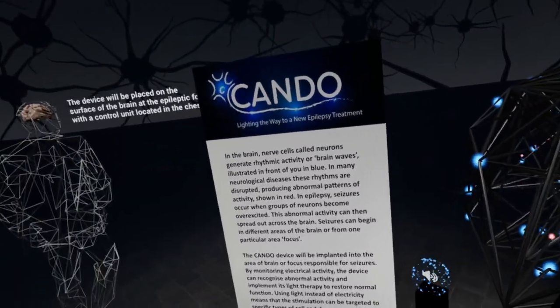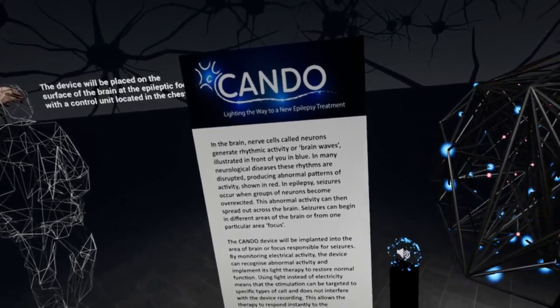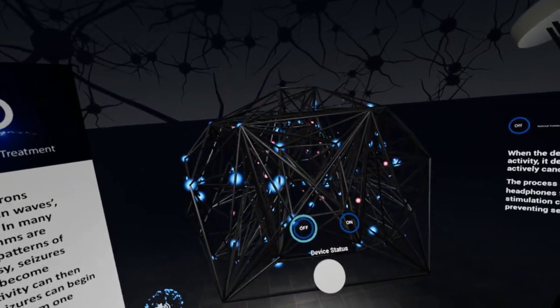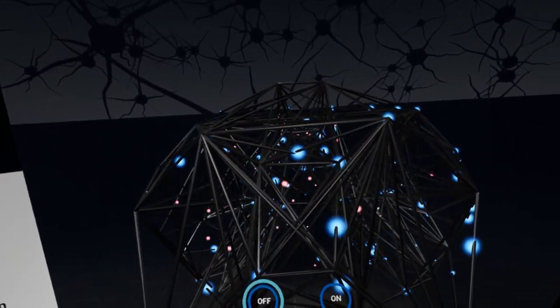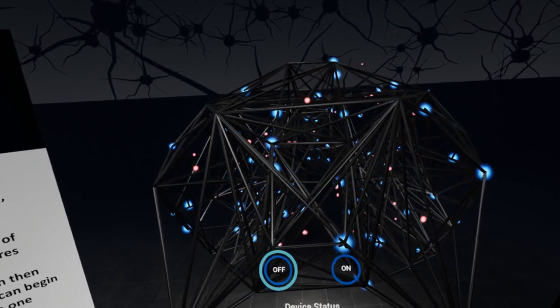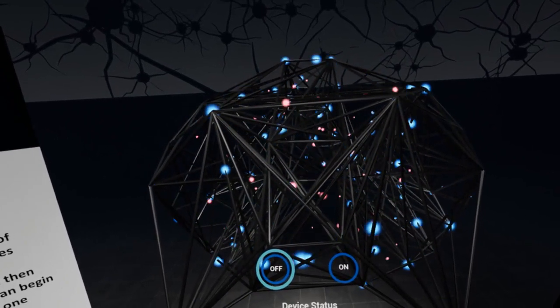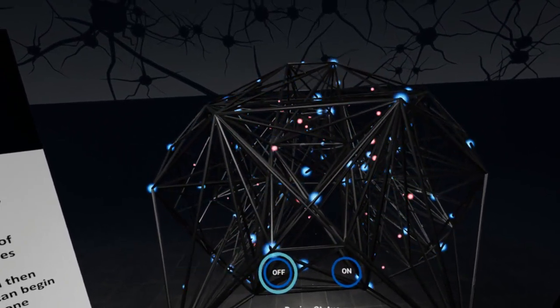In the brain, nerve cells called neurons generate rhythmic activity or brain waves, illustrated in front of you in blue. In many neurological diseases, these rhythms are disrupted, producing abnormal patterns of activity, shown in red.